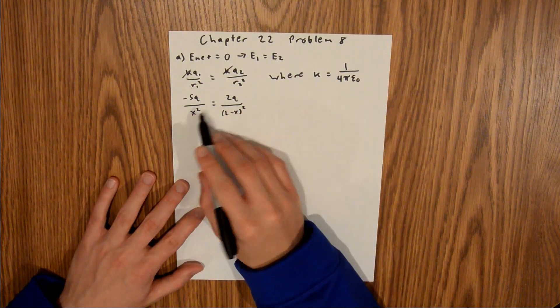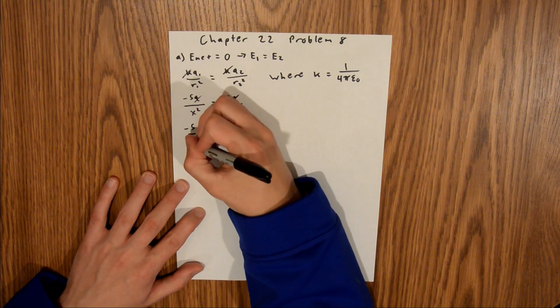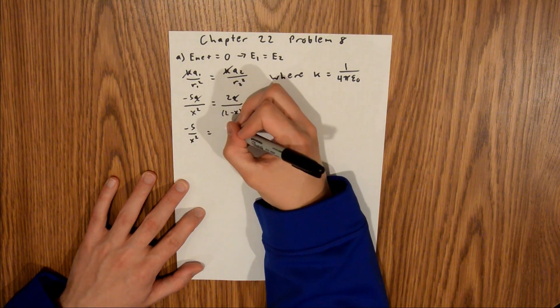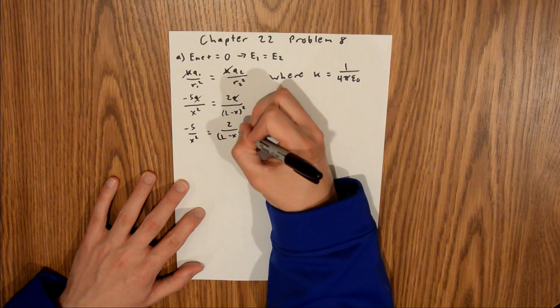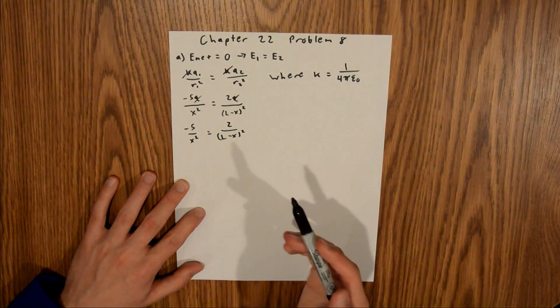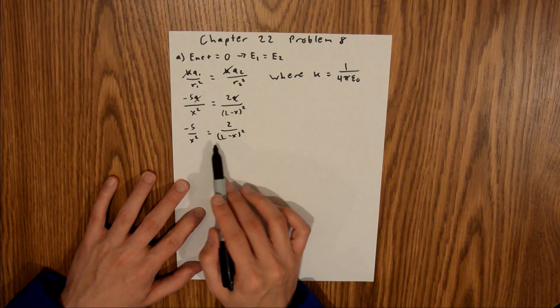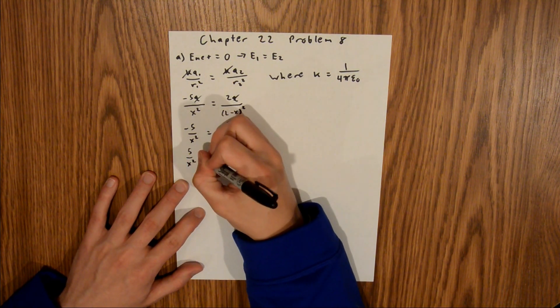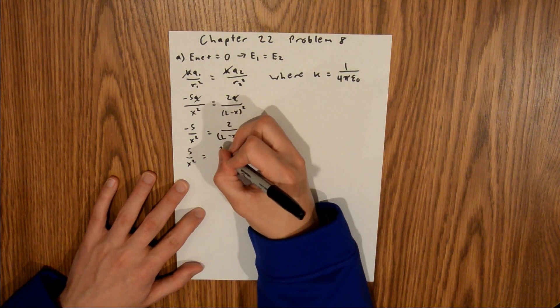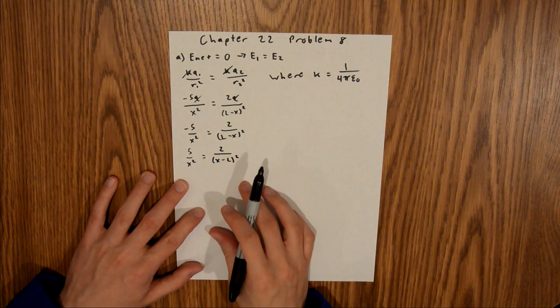And so now we have q on both sides, so we can cancel those out, and we're left with negative 5 over x squared is equal to 2 over l minus x squared. And so now what I'm going to do is I'm going to actually take this negative and put it in here and swap these around, and so this becomes 5 over x squared is equal to 2 over x minus l squared. I'll explain why I did that in just a minute.